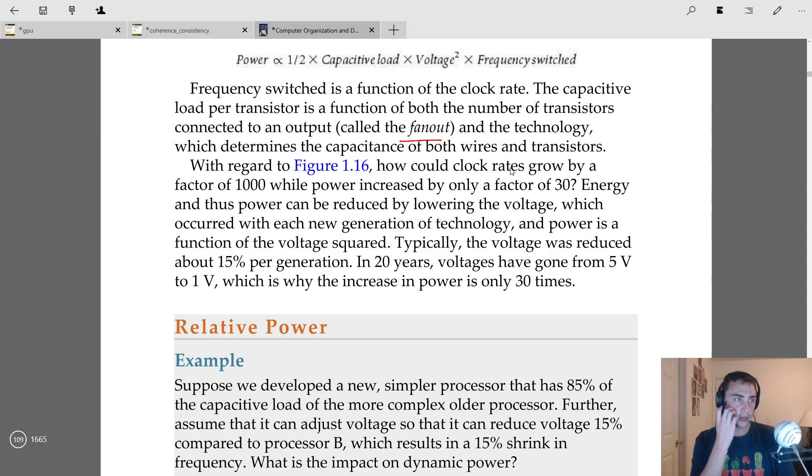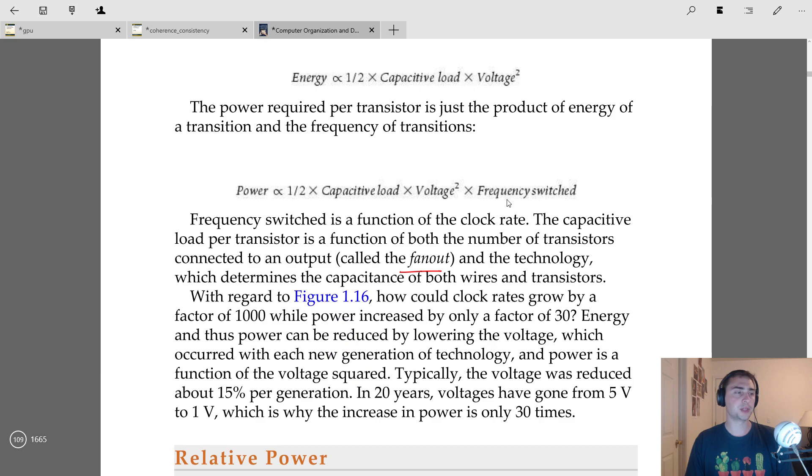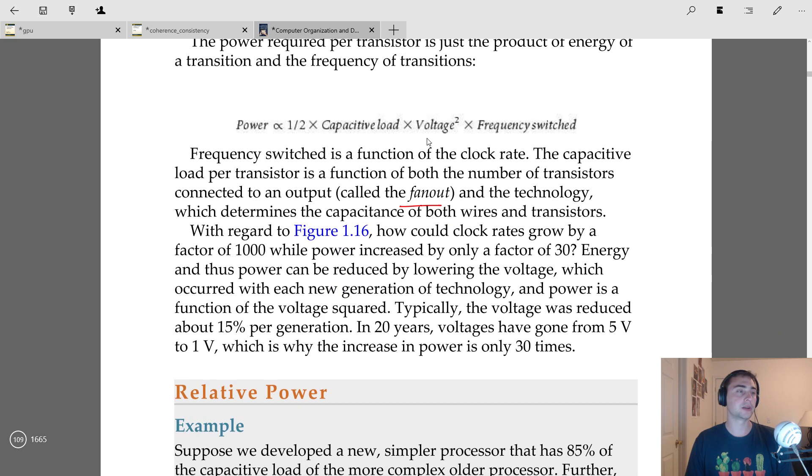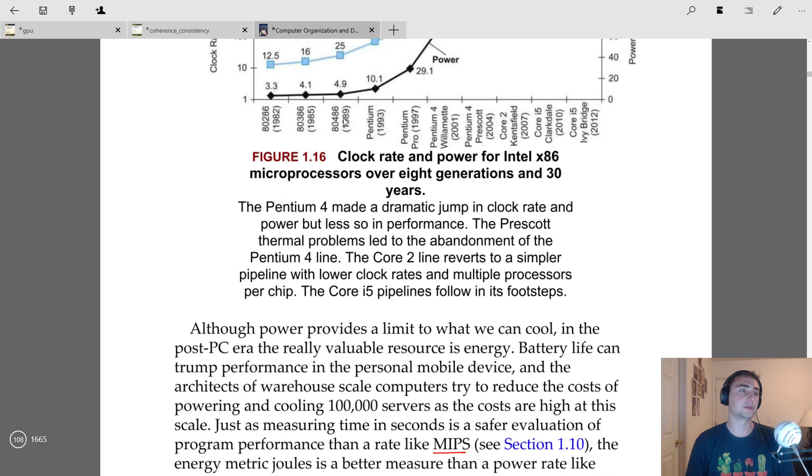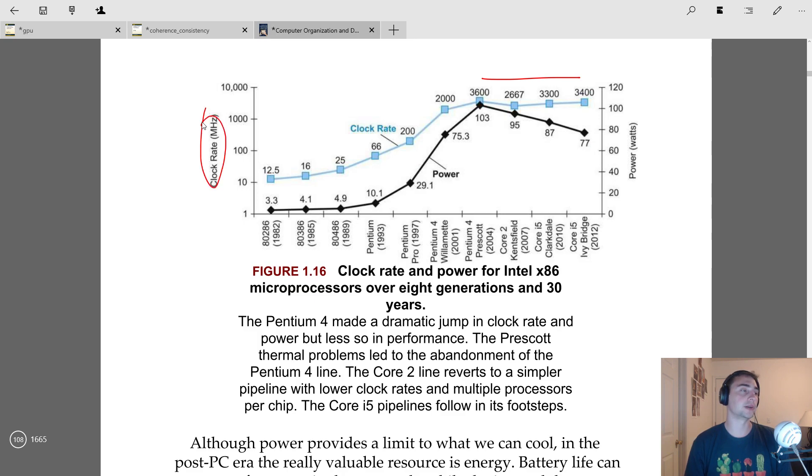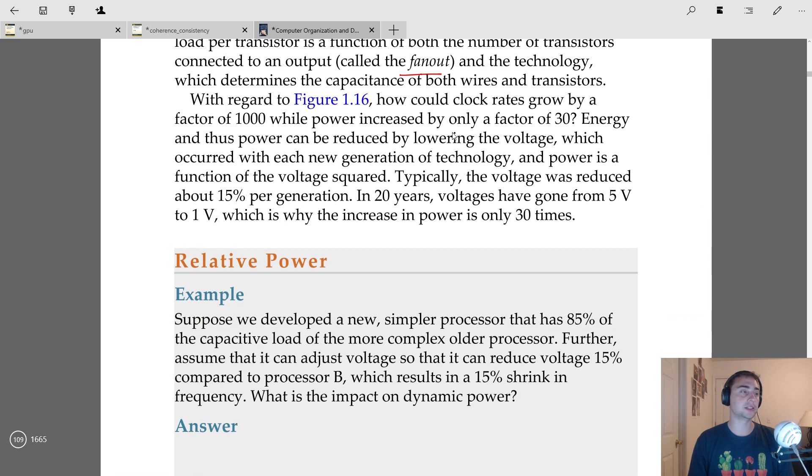One thing that might be a little surprising is we already saw right here that the power—how are we able to increase the frequency so much, but the power didn't increase nearly as quickly? Remember, this is clock rate, which is exponential scaling. This is a log-scaled axis, and this power over here is just an unaltered, linear scale. So how are we able to increase the frequency so much?